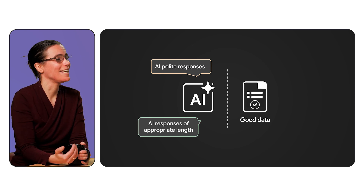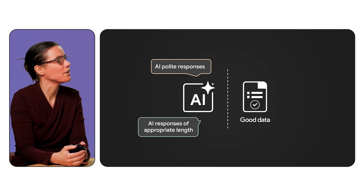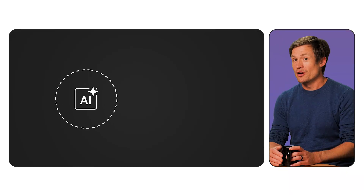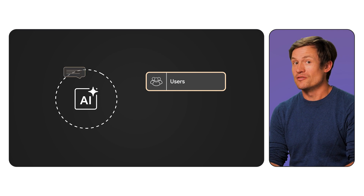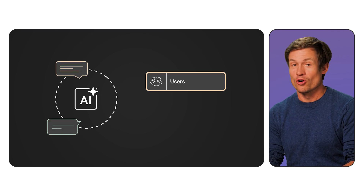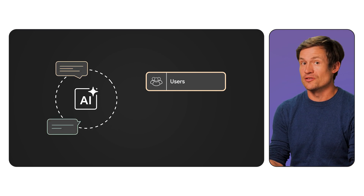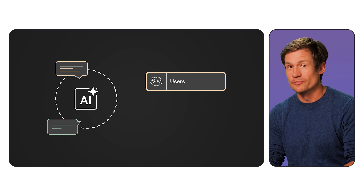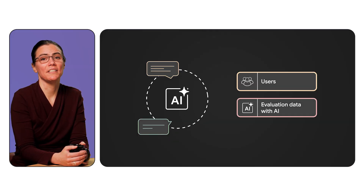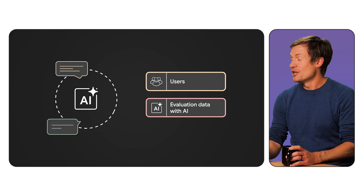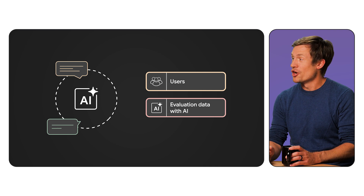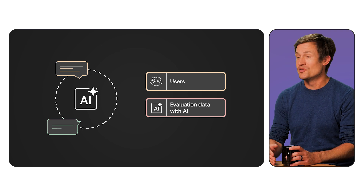How do we get that data to evaluate our app against? There are actually a number of ways. One potential source is directly from your users — if your policies allow it, you can use logs of interactions with your AI and the ratings of those interactions to find the ones that are most helpful. You may also be able to manually create a dataset using your knowledge of your users and the domain the AI application is designed to work in.